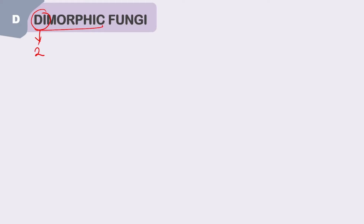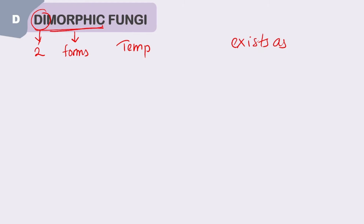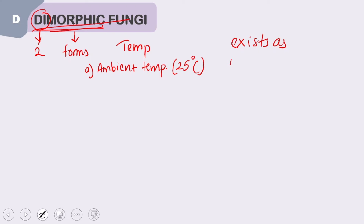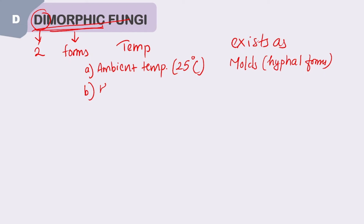Now shifting to dimorphic fungi. From the term 'dimorphic' — 'di' means two, 'morphic' means forms — so this fungi exists in two different forms at two different temperatures. At ambient temperature, which is 25 degrees Celsius in the environment, dimorphic fungi exist as molds, that is, in the hyphal form.